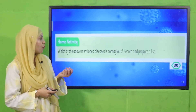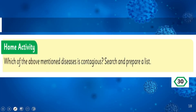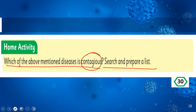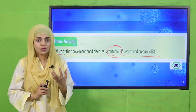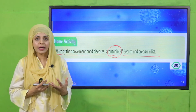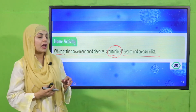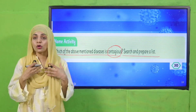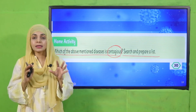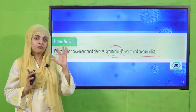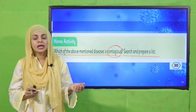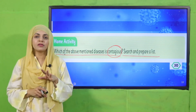For homework, do the home activity on page number 30: which of the above-mentioned diseases is contagious? Search and prepare a list. For example, COVID-19 is a contagious disease that spreads from person to person. Prepare a similar list, share it with your class fellows to spread awareness, and you can also take help from your parents.